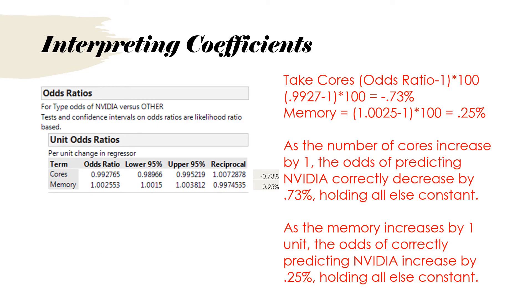Now we're going to interpret the coefficients. You don't look at the actual parameter estimates this time. You find the unit odds ratios. Core's value is .9927. Subtract 1 from that, multiply by 100, and turn it to a percentage.